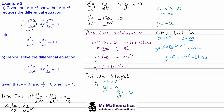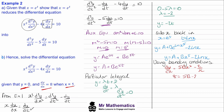Now we use our boundary conditions to find A and B. We've been told that when x equals 1, y equals 0 and dy/dx equals 8. Differentiating with respect to x: dy/dx equals 5B·x⁴ minus 2/x. Substituting dy/dx equals 8 and x equals 1: 8 equals 5B minus 2, so B equals 2.